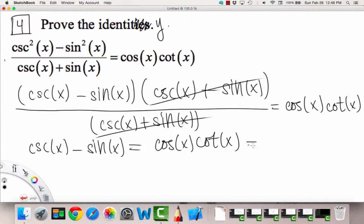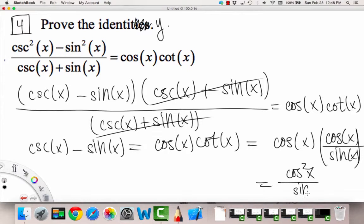So first of all, the right side can be simplified into saying cosine x times, and cotangent is cosine over sine, because it's the flip of tangent. So the right side simplifies into cosine squared x over sine x. So maybe that'll be a guide, and we can match up the left side to match that.